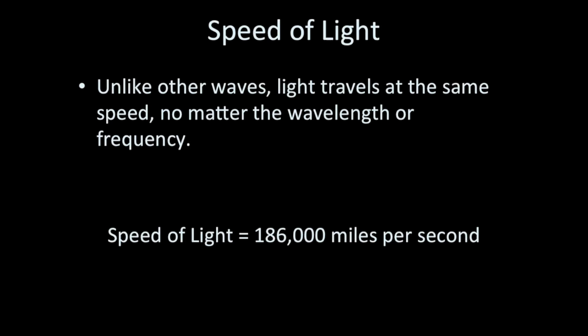Now, unlike other types of waves like water waves or sound waves, light can travel at only one speed — it travels at the speed of light no matter the wavelength or the frequency. That speed is 186,000 miles per second. This is the speed of light in a vacuum, through space. This is, as it turns out, the cosmic speed limit — there really is nothing that goes faster than light, and 186,000 miles per second is mighty fast.